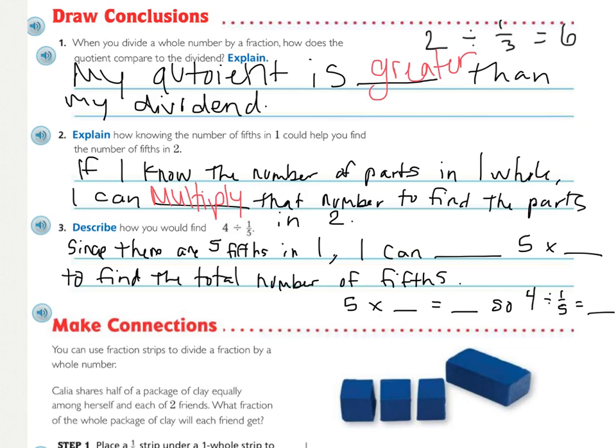Excuse some of the bad handwriting. It says, since there are five fifths in one, I can blank five times blank to find the total number of fifths. So what word and what number are we going to fill in? And then I want you to fill in right here because this is your justification of why you can do what you are doing. You should have used the word multiply, and then you could have multiplied four because if we know there's five fifths in one, then in four wholes, it's just four times five. So we're going five times four, and what does that equal? That equals 20. So we know that four divided by one fifth is also 20.